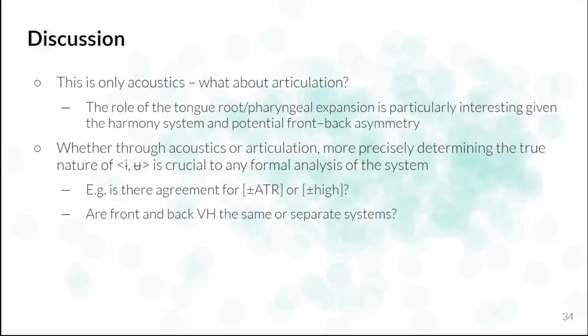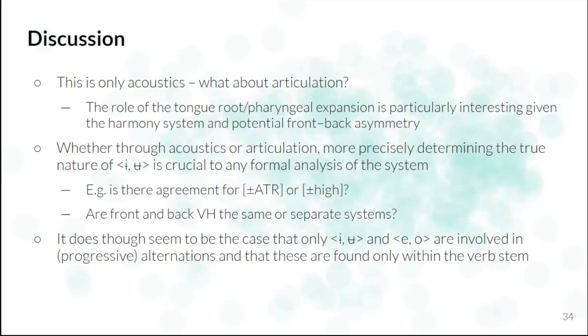So, for example, are we talking about agreement for a feature like plus or minus ATR or plus or minus high? This depends on what the quality of the vowels in the system actually is and what's going on there. And then, if there is some sort of asymmetry that runs very deep, perhaps even deeper than is canonical in Bantu languages, are we talking about one system or are we talking about two systems when looking at front versus back vowel harmony? And one thing that I think I can say for certain is that it does seem to be the case that only the degree 2 vowels and degree 3 vowels are involved in progressive alternations. And that these alternations are only found within the verb stem, as is common for Bantu languages with progressive harmony.